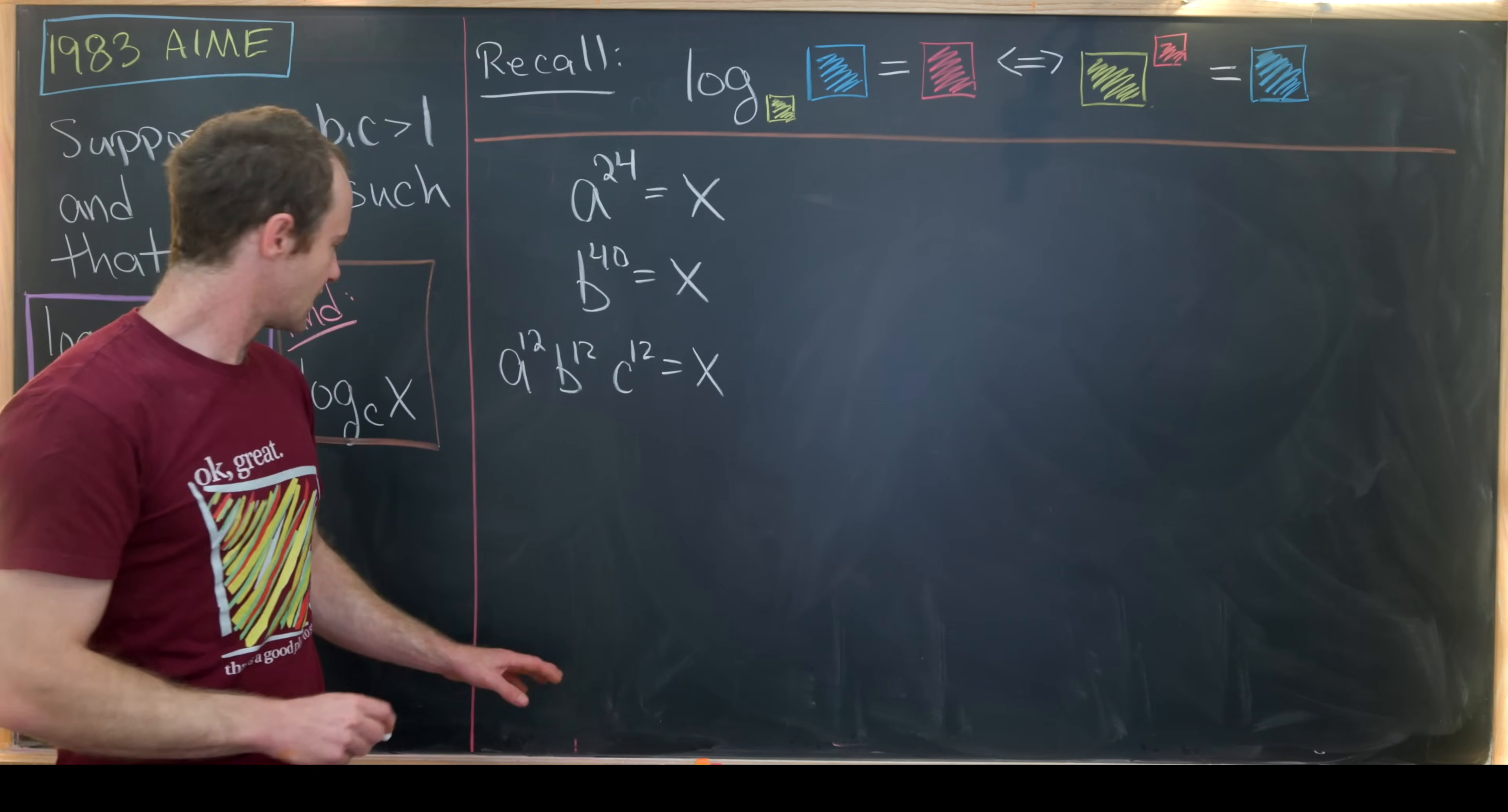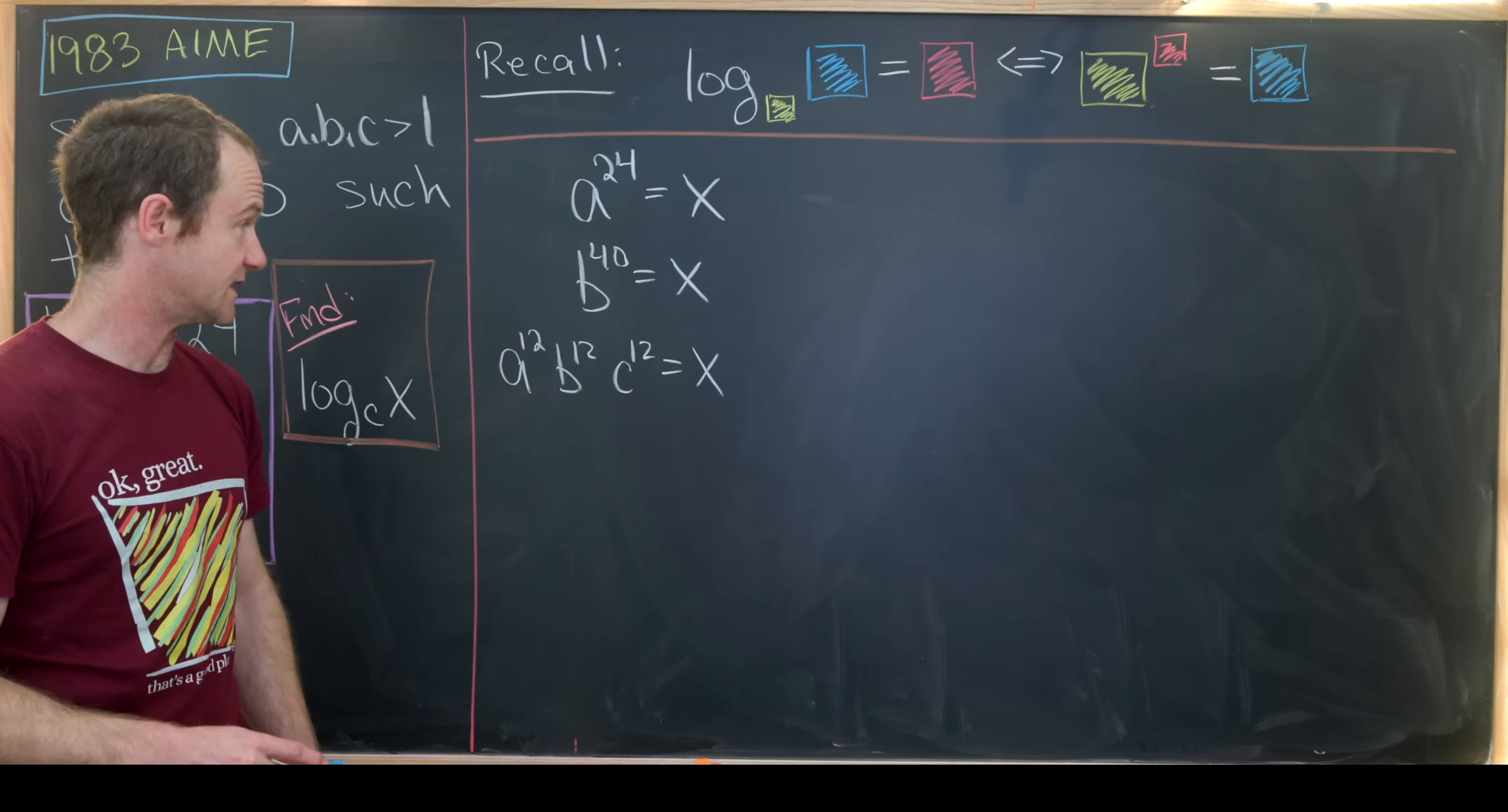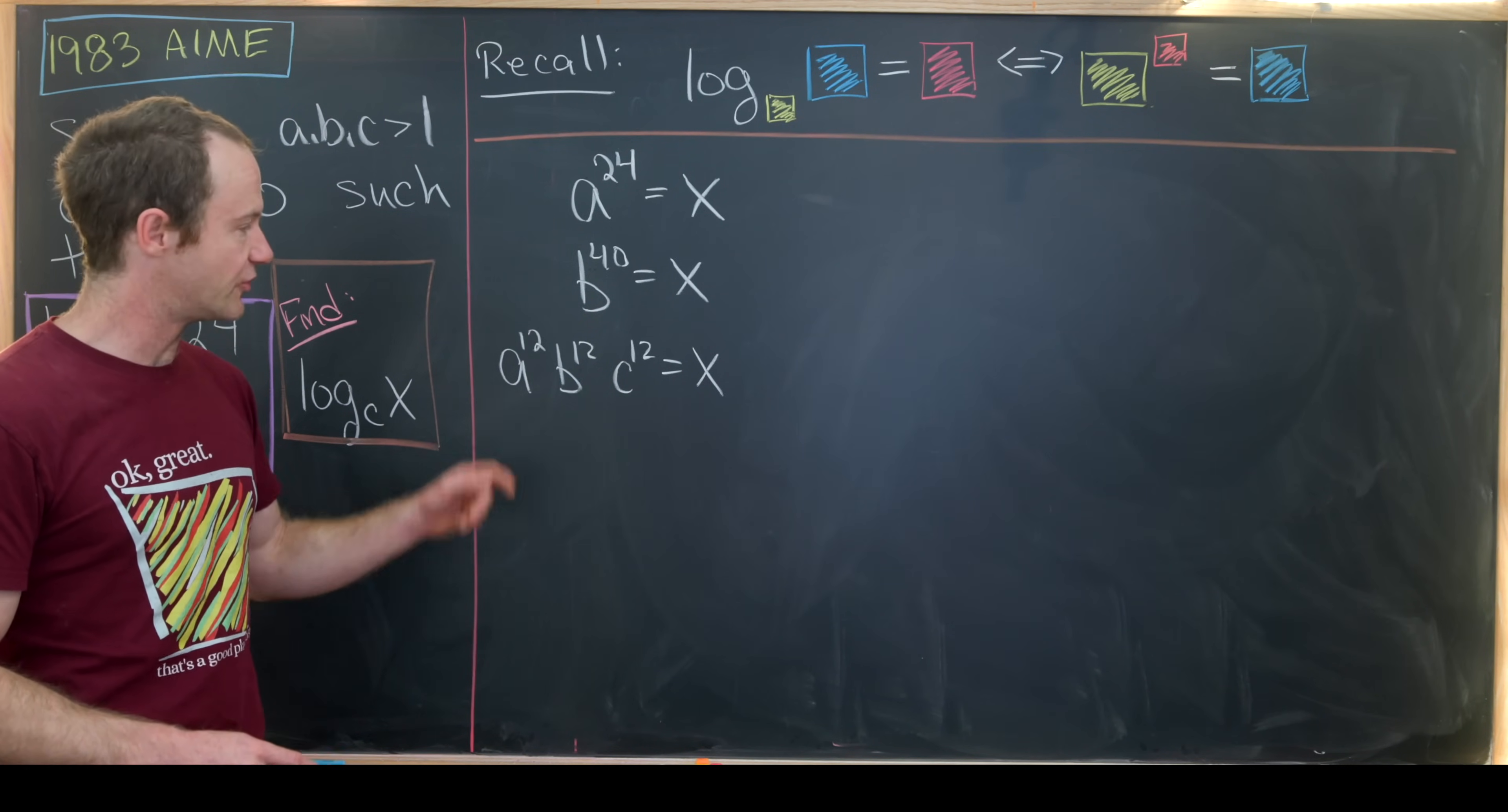Let's notice that our final goal is to determine what number that when we raise C to that number, we get X. So somehow we want to put all these three equations together and solve for C. Probably the first thing that we want to do is take the least common multiple of 12, 40, and 24. I think that's maybe our best first bet. So what will that be? I believe it'll be 120.